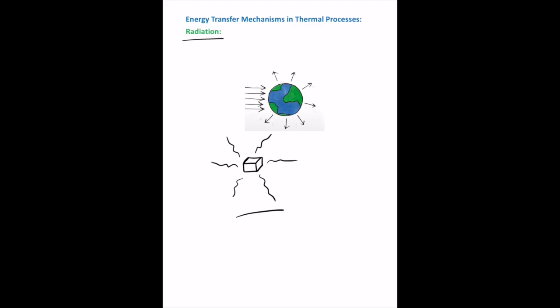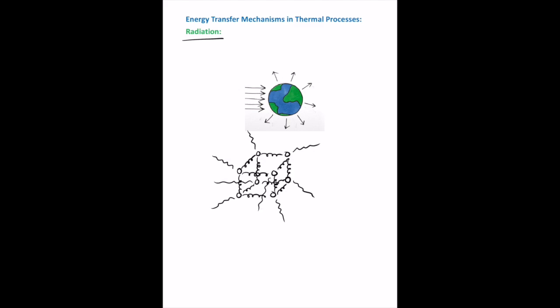Another transfer mechanism is radiation. All objects continuously radiate electromagnetic waves because any accelerated electric charge emits electromagnetic radiation. Since the temperature of any object is due to the random motion of molecules containing electric charges, any object radiates electromagnetic waves — known as thermal radiation. An object also continuously absorbs electromagnetic radiation from the environment. If the object is in equilibrium with its environment, it radiates and absorbs energy at the same rate and its temperature remains constant.